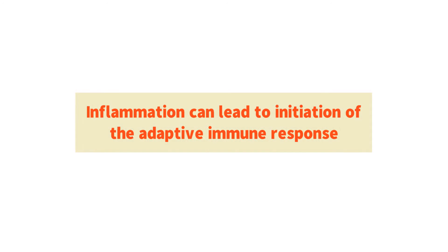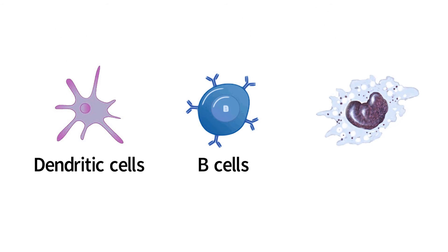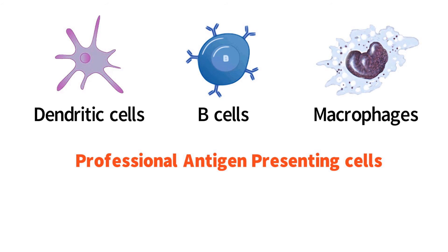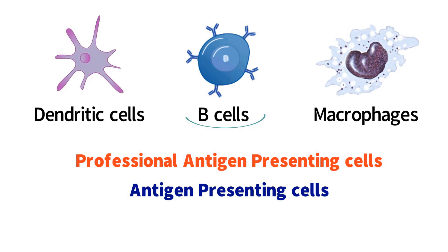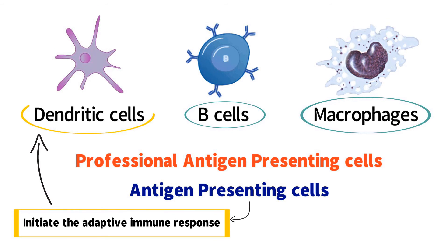Number 4. Inflammation can lead to initiation of the adaptive immune response. Dendritic cells, B cells, and macrophages are all a class of cells known as professional antigen presenting cells. B cells and macrophages perform other immune functions, so the process of antigen presentation to initiate the adaptive immune response mostly occurs because of dendritic cells.